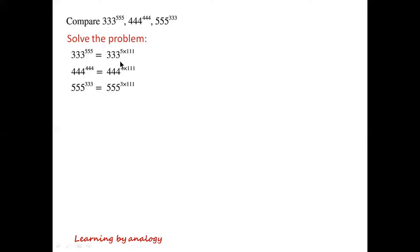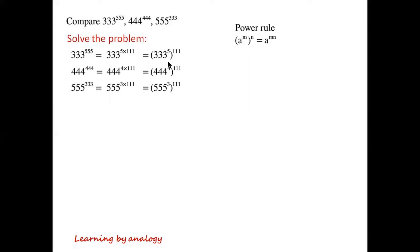So we can write 333 to the power of 5 times 111, and 444 to the power of 4 times 111. The power rule says a to the power of m·n equals (a to the power of m) to the power of n. So we can write 333 to the power of 5, all to the power of 111, and 444 to the power of 4, all to the power of 111.